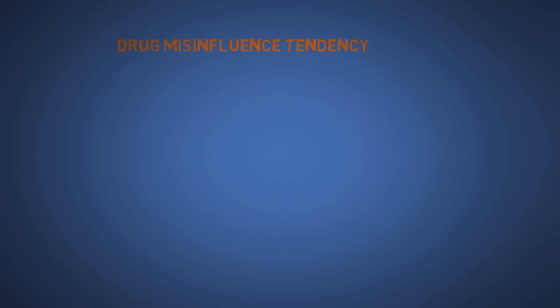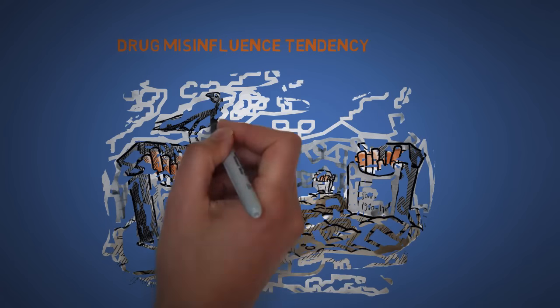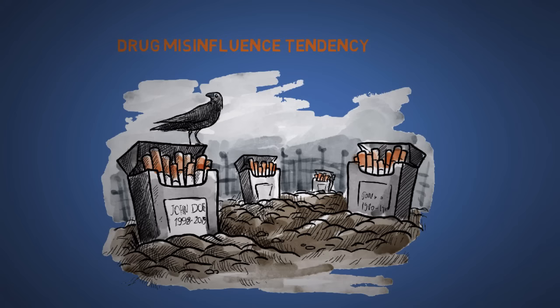The twentieth is the drug misinfluence tendency. This is a very strong tendency that costs lives. It is often supplemented by simple pain avoidance psychological denial.